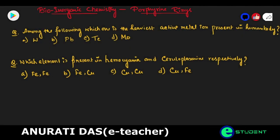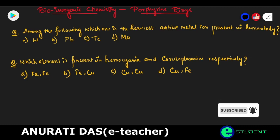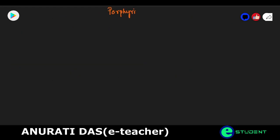Hi everyone, this is our next class of bio-inorganic chemistry. In the previous class we discussed the important metal ions or essential metal ions required in our body — their functions. Now we are going to learn about the porphyrin rings as a basic concept, and after that we can discuss these rings with hemoglobin and myoglobin. There are two questions for you to try; please answer in the comment box from the previous class. Today's class will be on porphyrin rings.